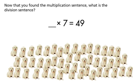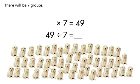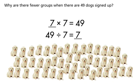Now that you found the multiplication sentence, what is the division sentence? There will be seven groups. Why are there fewer groups when there are 49 dogs signed up?